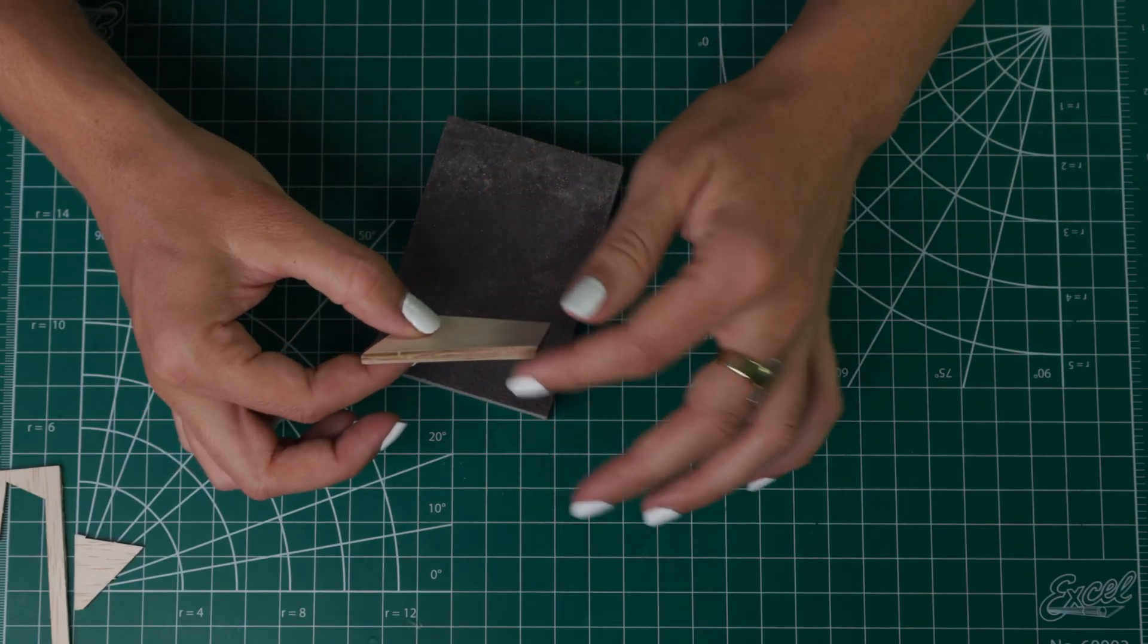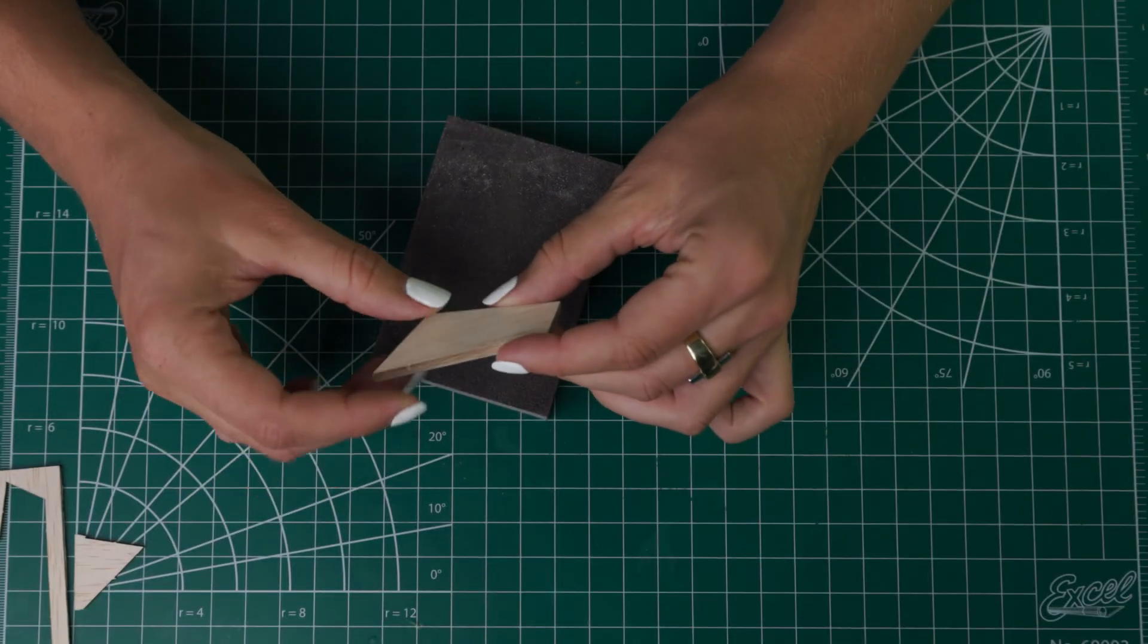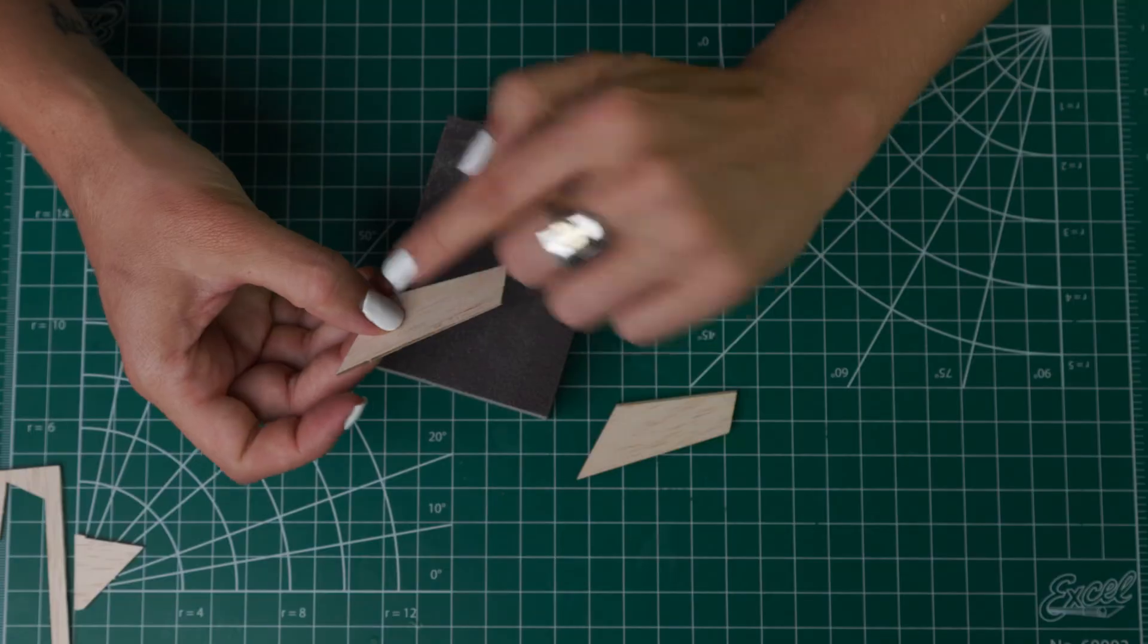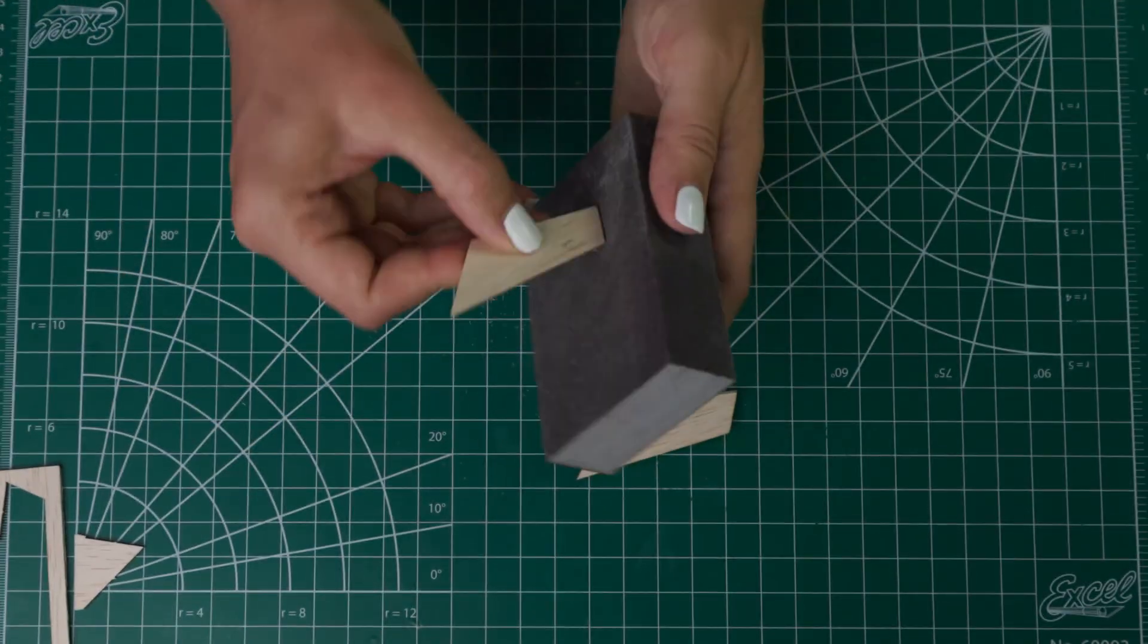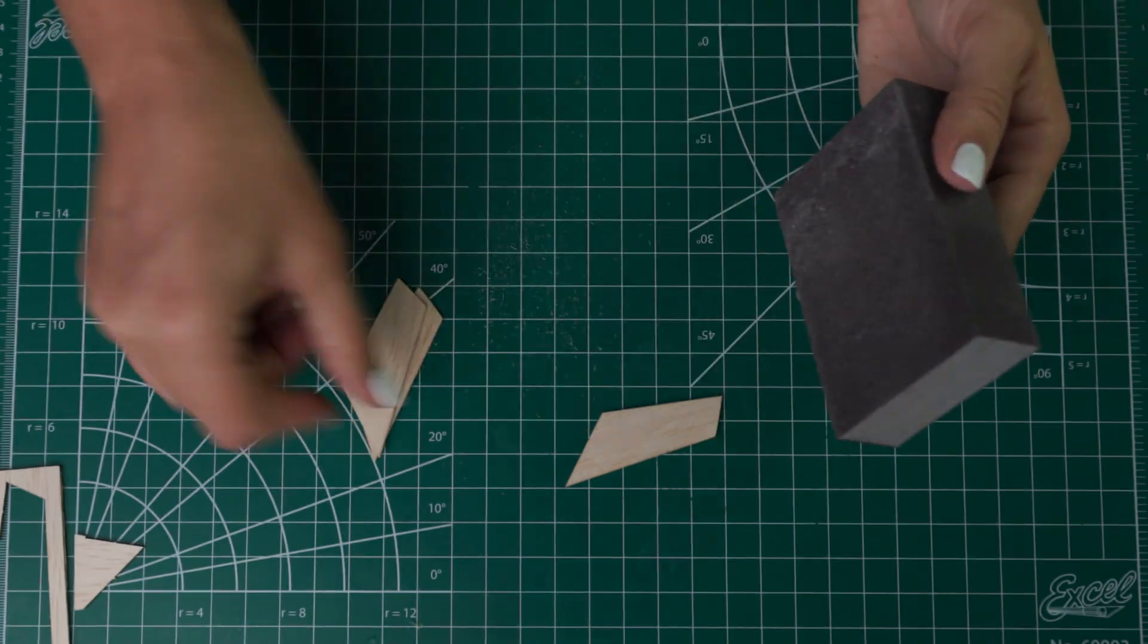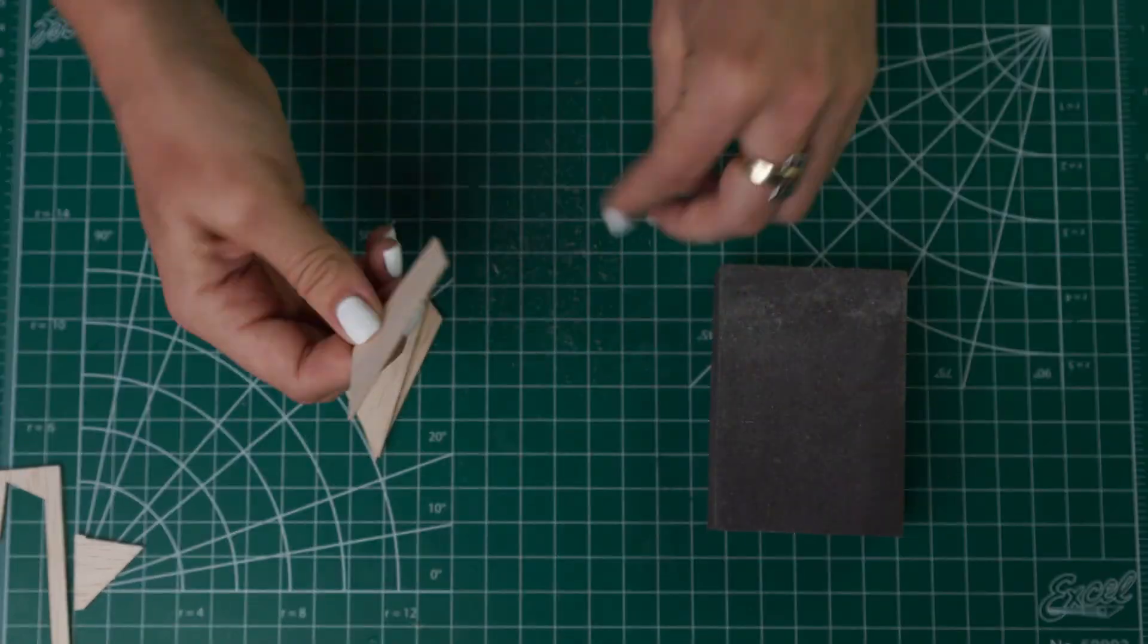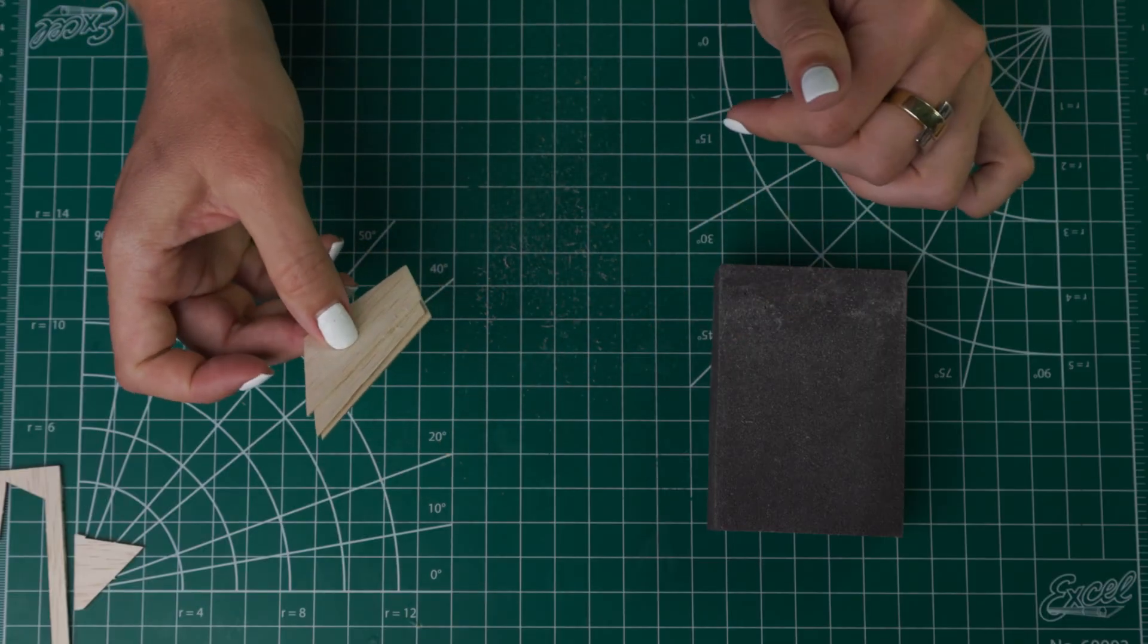Next up you can round the leading edges. If you look at your instructions it points out which those two are, so just those two sides we can round in this direction. Now your edges are rounded and your fins are prepped.